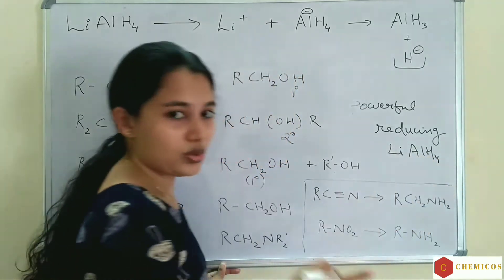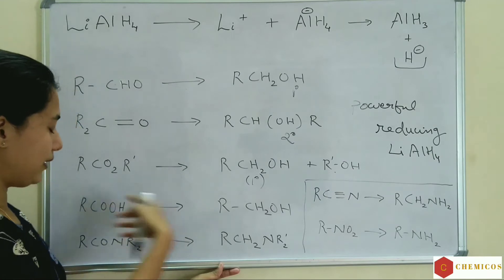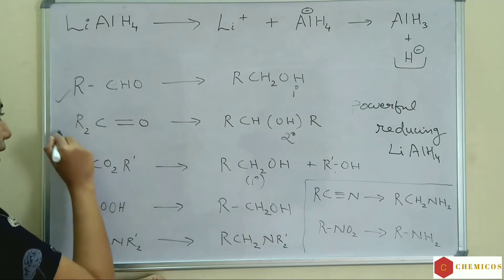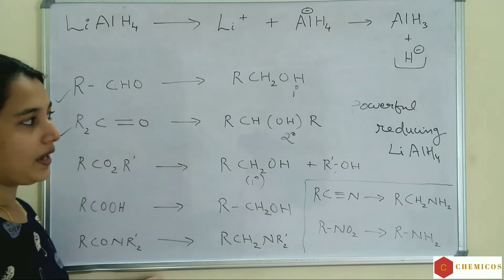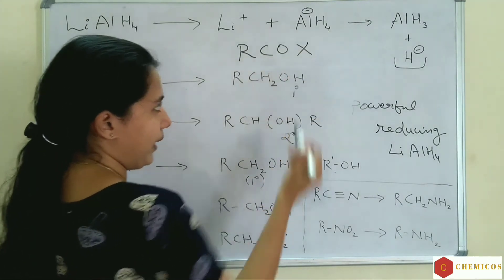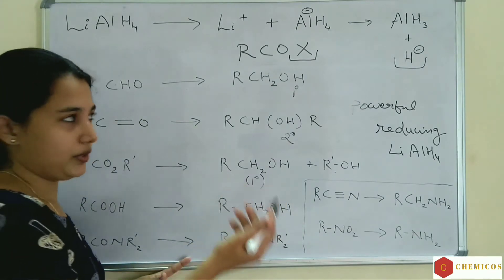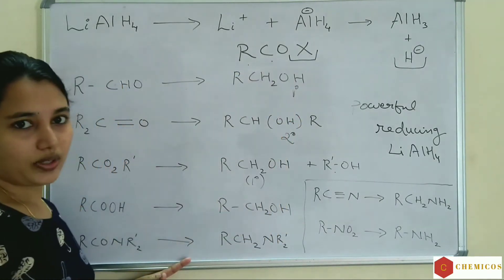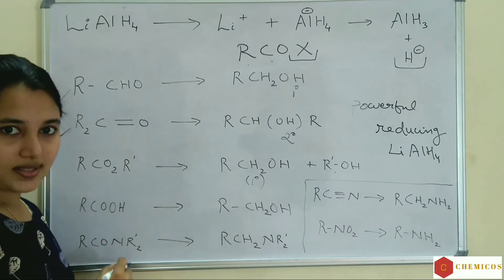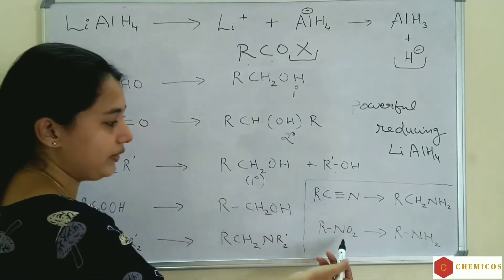Sodium borohydride cannot reduce all compounds. It can reduce only aldehydes, ketones, and acid chlorides. Acid chloride is RCOX where X can be a halide — chlorine, bromine, or iodine. Acid chlorides are reduced by sodium borohydride. It cannot reduce esters, acids, anhydrides, cyanide groups, etc.